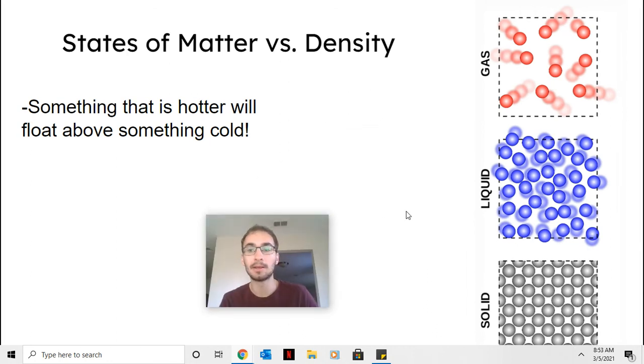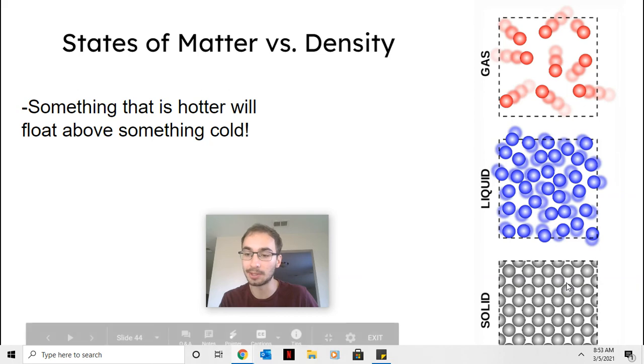So, that's why something that is hotter will float above something that's cold, because as atoms get hotter, they spread out more. So, the hotter something is, the more it'll float above it. So, it'll be gas, and liquid, and solid.